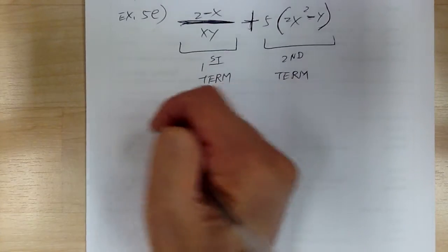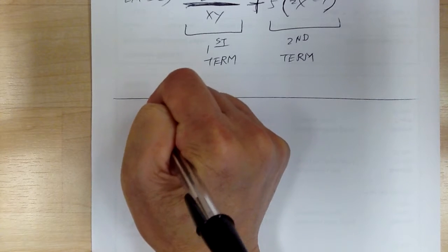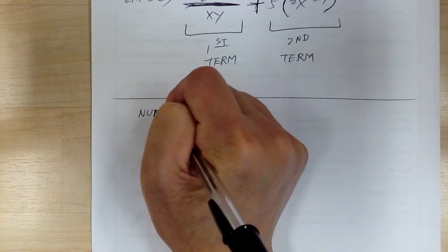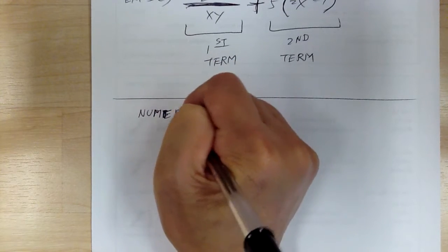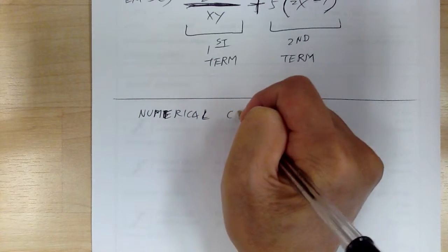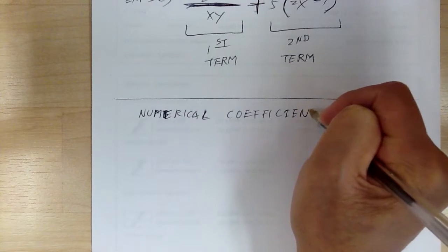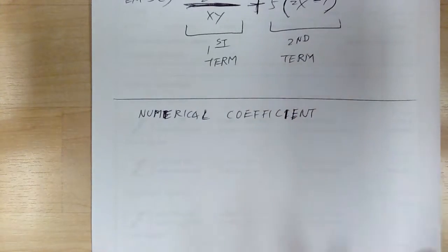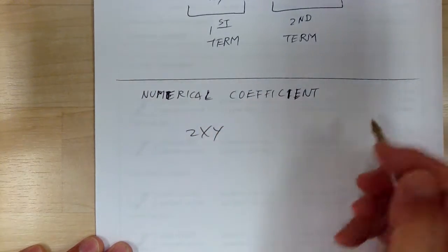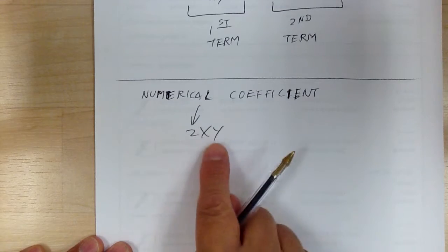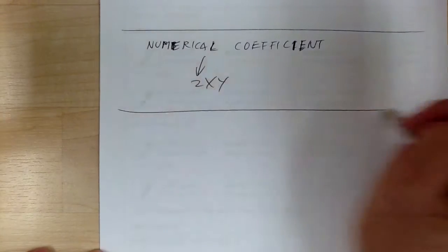Now let's go to page 94 and look at the next term — there are a lot of definitions. Numerical coefficient: the numerical coefficient is the number before the variable. For example, in 2xy, the numerical coefficient is 2. It's the number before the variable.